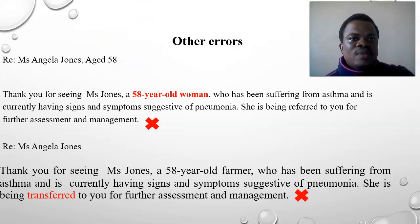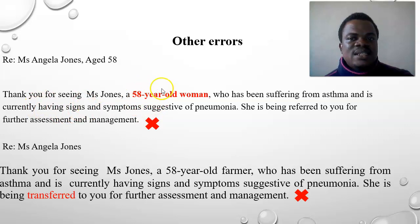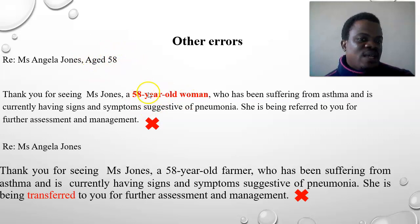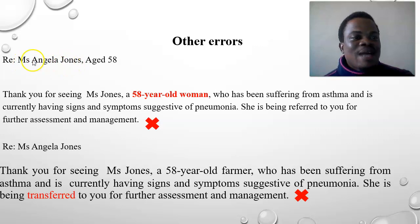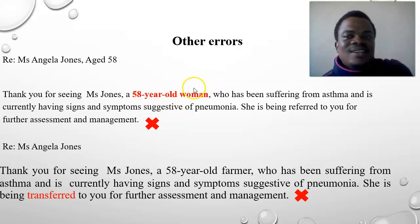Other errors include: after writing the patient's name and age in the heading, some candidates repeat the patient's age in the introduction — this is not okay. If you used date of birth in the heading, you can mention age in the introduction, but not if age was already stated. Also, some candidates write 'woman' unnecessarily — if you've already used 'Miss,' there's no need to add 'woman.' You can use the patient's occupation instead, such as 'a 58-year-old farmer.'